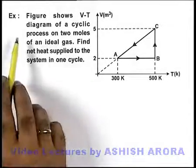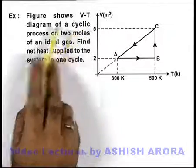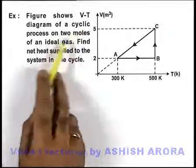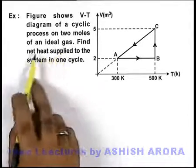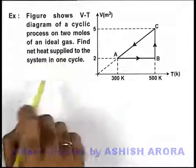In this example, we are given that the figure shows a V-T diagram of a cyclic process on two moles of an ideal gas, and we are required to find the net heat supplied to the system in one cycle.